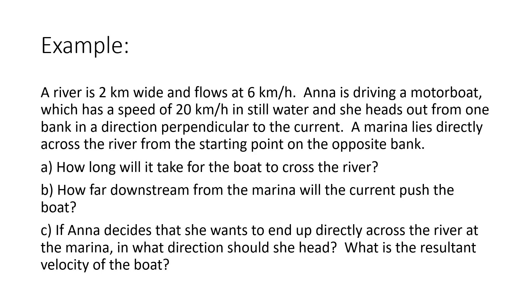Now we're going to do an example talking about vertical and horizontal components of velocity. Suppose Anna is trying to cross a river, and the current flows 6 kilometers per hour. She has a motorboat which can travel at 20 kilometers per hour in still water. She wants to go directly across and heads out directly across — but she's a little mistaken because she's not taking the current into account. We want to know how long it'll take to cross, how far downstream the current will push the boat, and what direction she should head to get directly across.